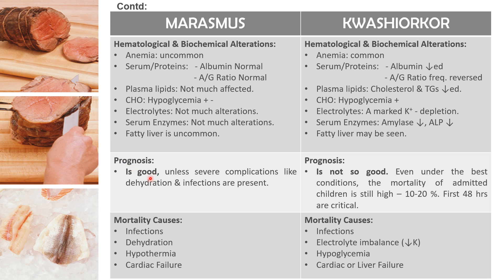Prognosis of Marasmus is good unless severe complications like dehydration or infections are present and not timely treated. The prognosis of Kwashiorkor is not so good; mortality is high at 10 to 20 percent even when children are admitted to hospital. The first 48 hours are very critical and deaths are commonly seen especially in the early period.